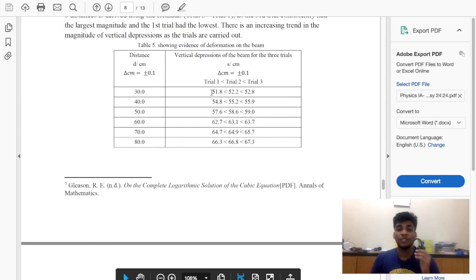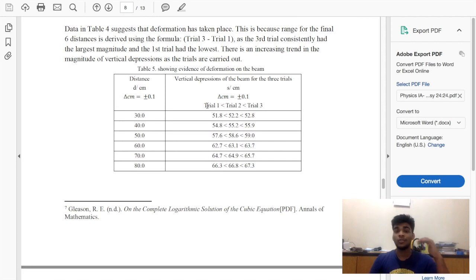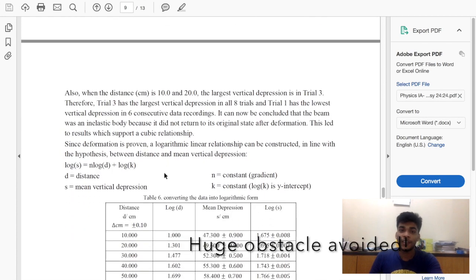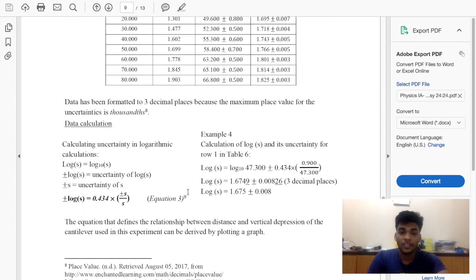By the time I reached trial 3, the cantilever was bending more and more every time for the six distances, which meant that there was deformation. I just created a table about that. You're actually supposed to evaluate throughout, not just at the end. Though you're supposed to evaluate at the end as well, but it should be seen throughout the IA.